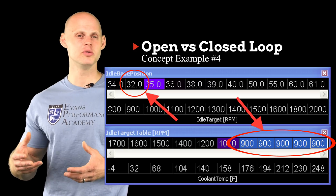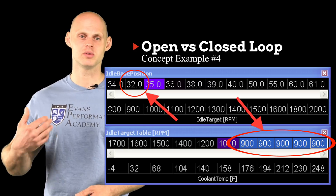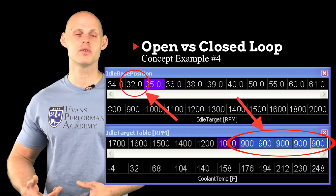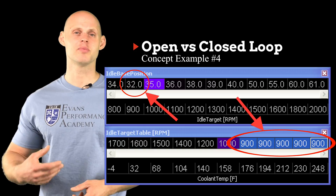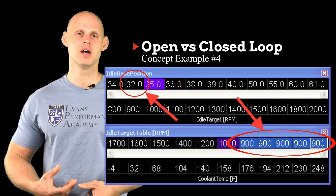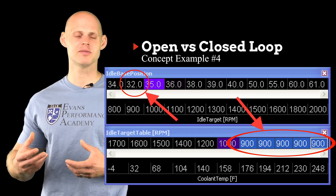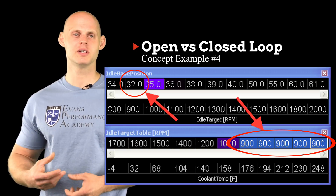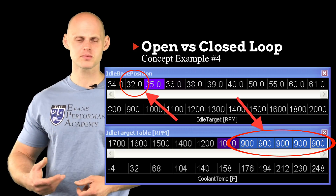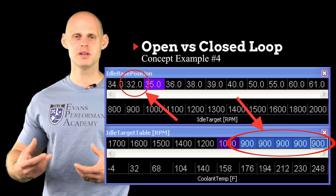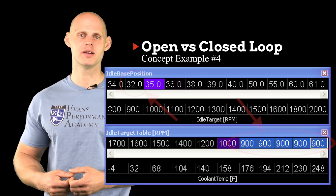The problem with using open loop style control on idle is that we know our idle is going to change. If we're coming to a light, our idle might want to stall down if we have a light flywheel, or coming down to a stop, the deceleration into idle can cause a dip. So we're going to want something more to control idle speed, because simply using an open loop duty control table is probably not going to give us that exact desired target idle RPM.